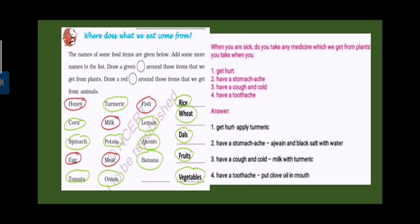Here are food items. We get all the food items we get from plants, so green color.